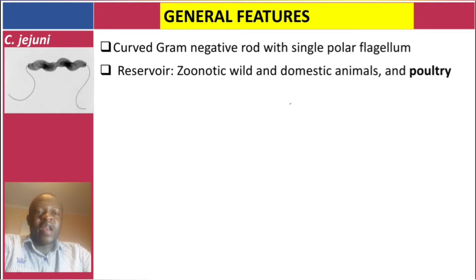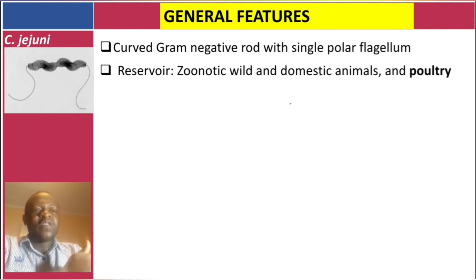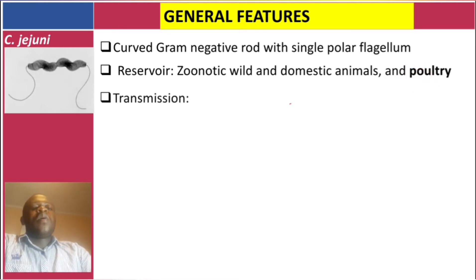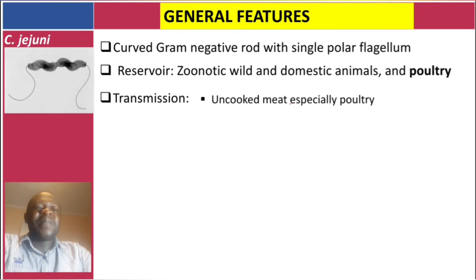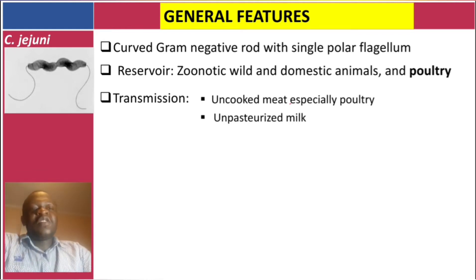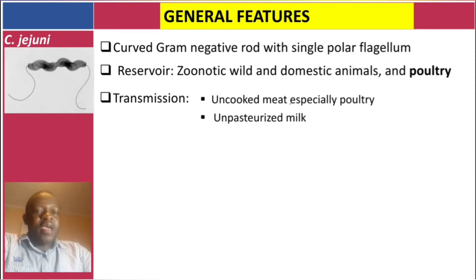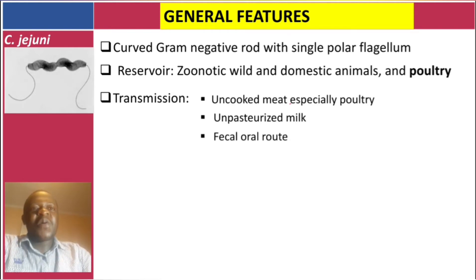The reservoir is zoonotic — wild and domestic animals and poultry, with poultry being the most important. Transmission occurs through uncooked meats especially poultry, ingestion of unpasteurized milk, and via the fecal-oral route, similar to other bacteria like cholera.